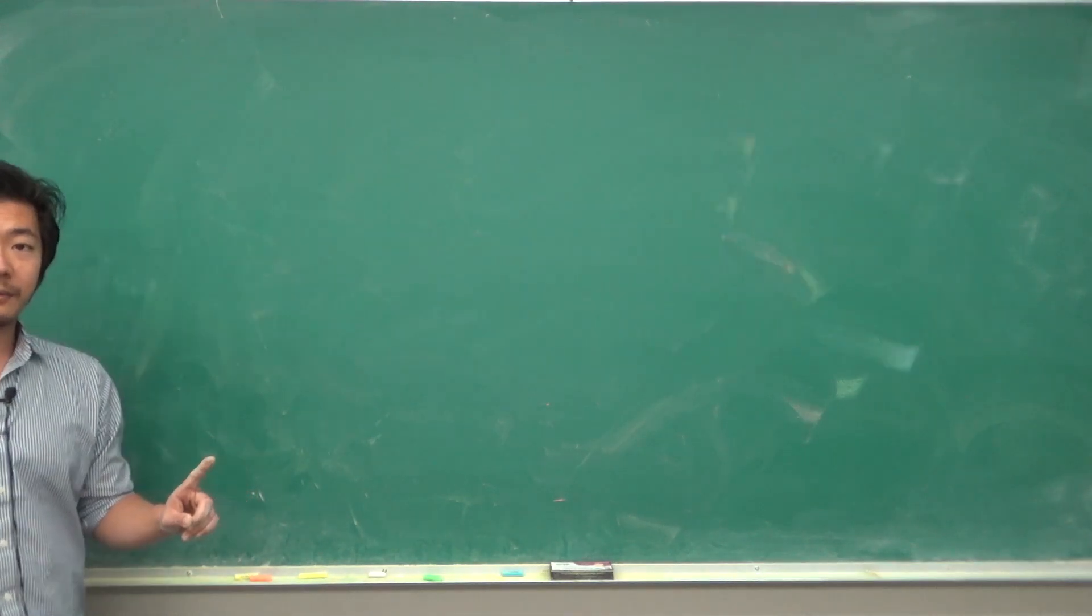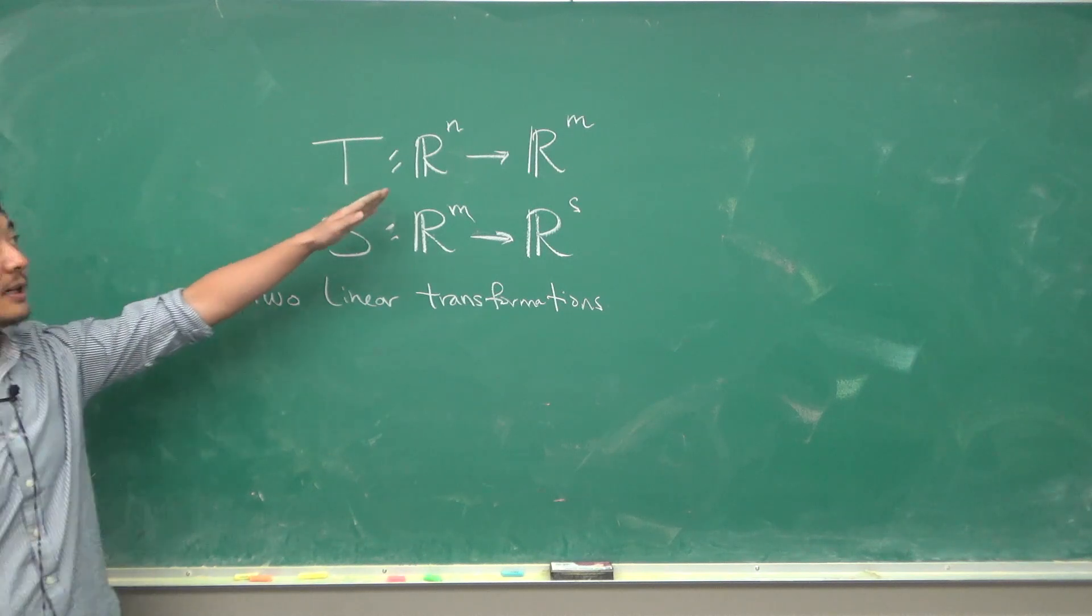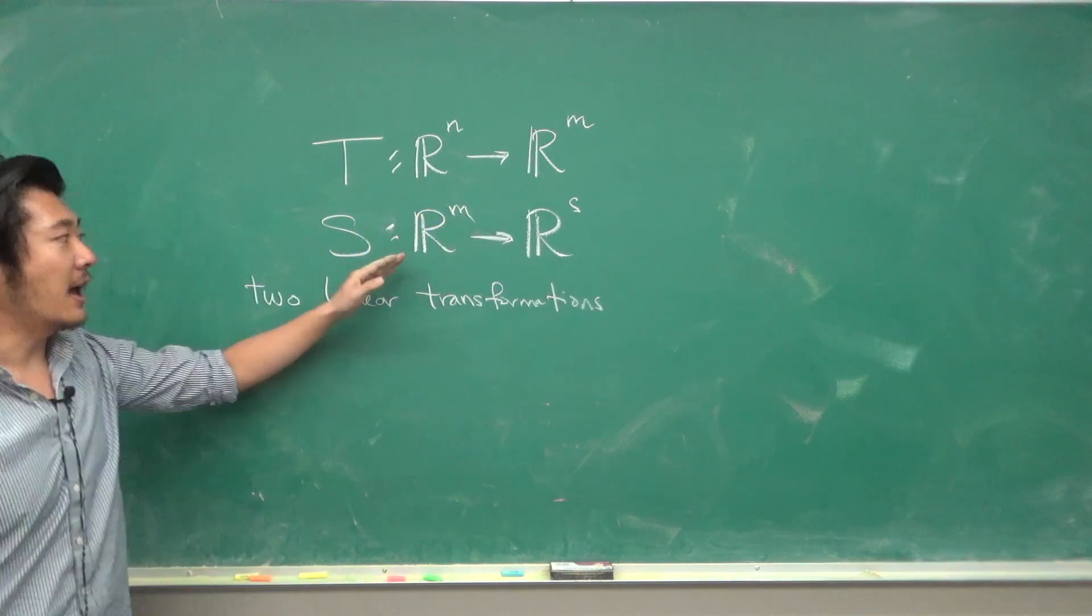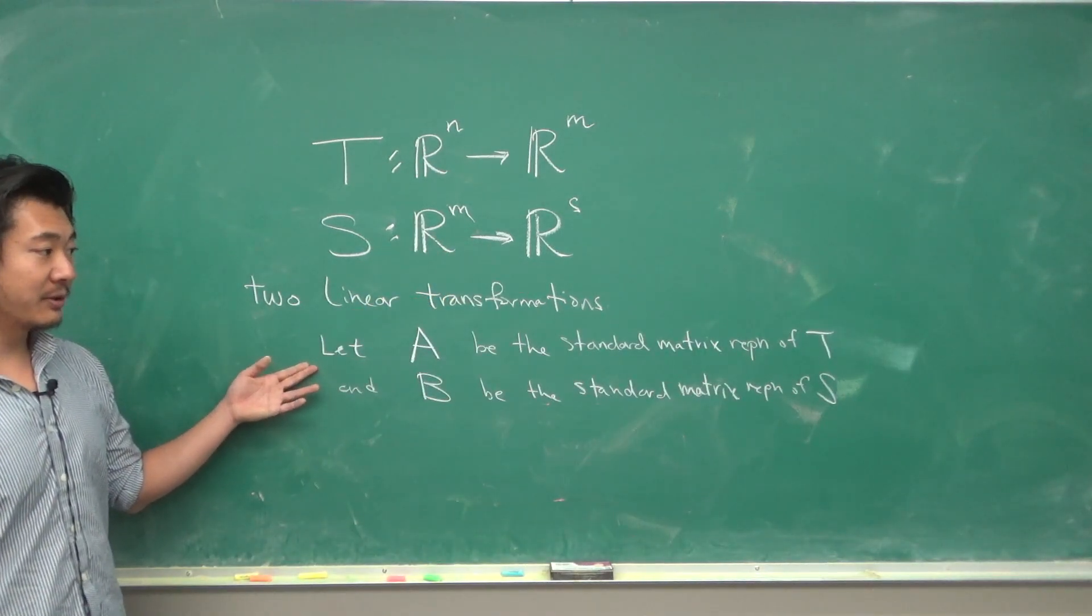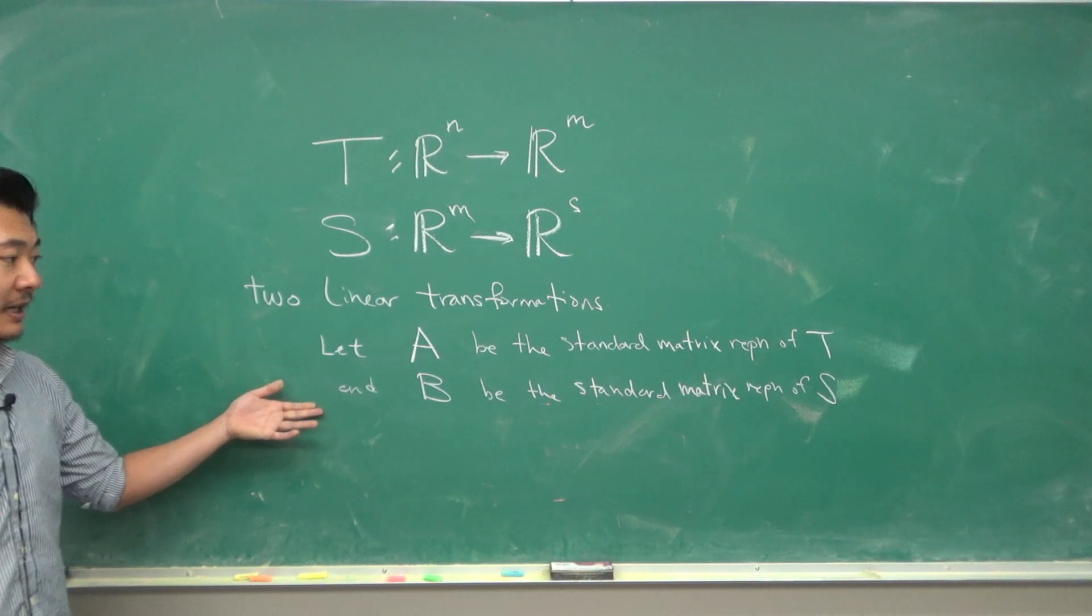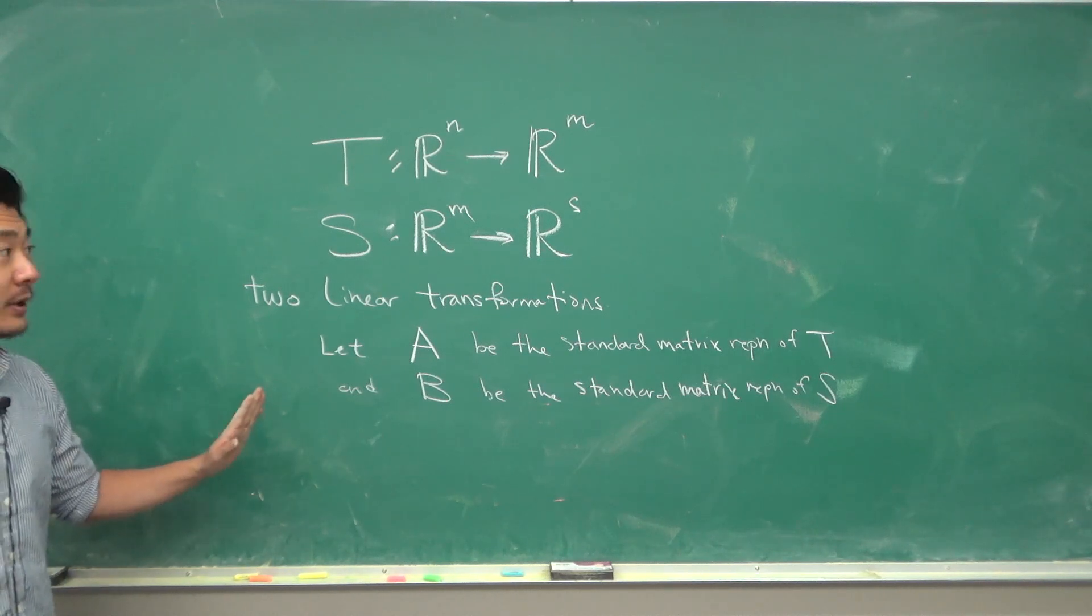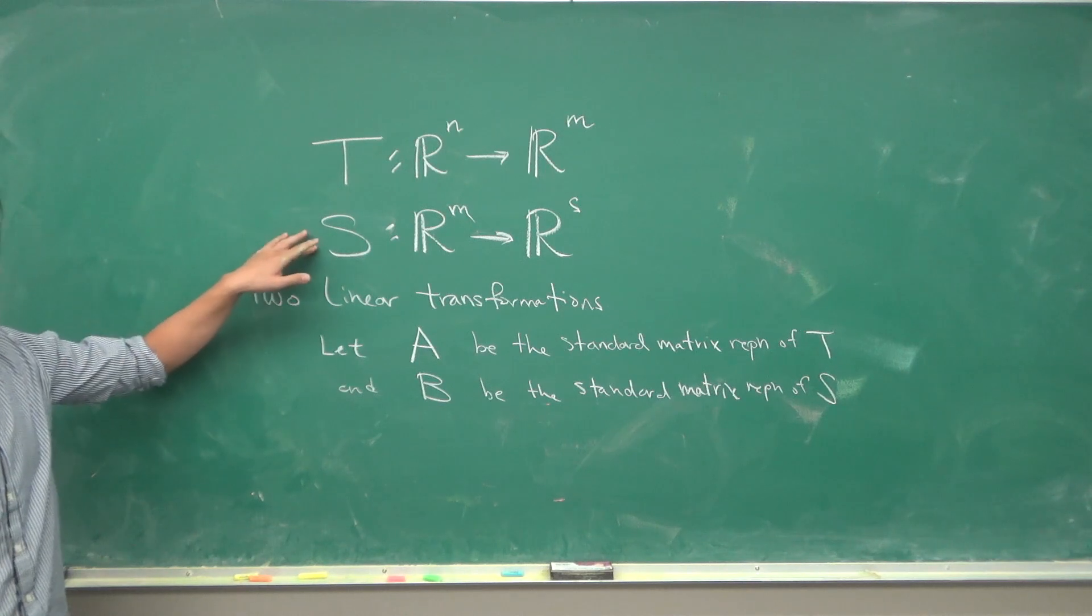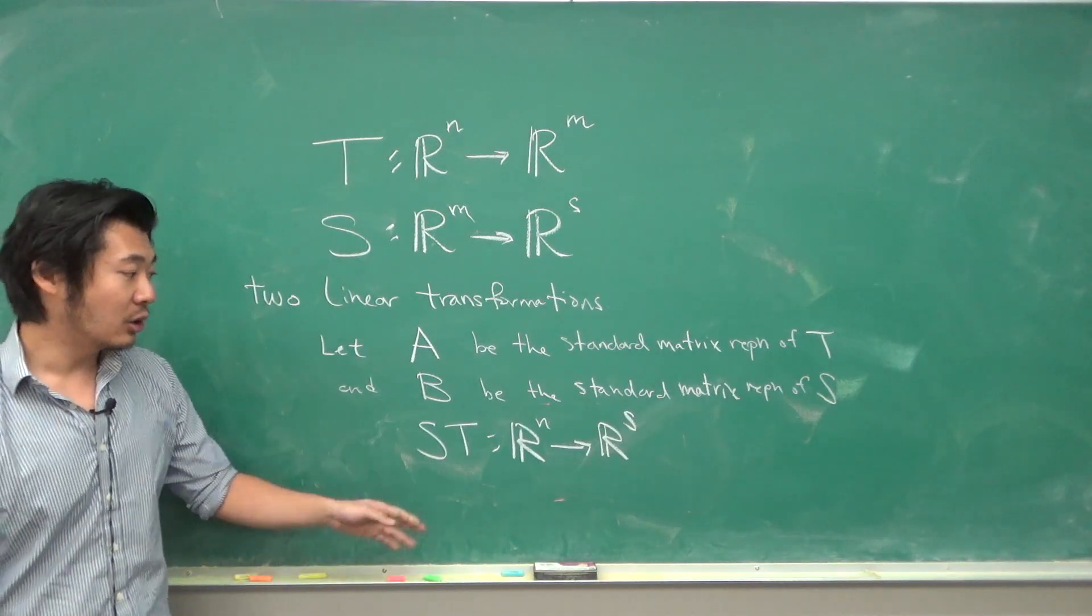Why is matrix multiplication defined in this way? Suppose we have two linear transformations: T mapping from R^n to R^m and S mapping from R^m to R^s. Let A be the standard matrix representation of T and B be the standard matrix representation of S.